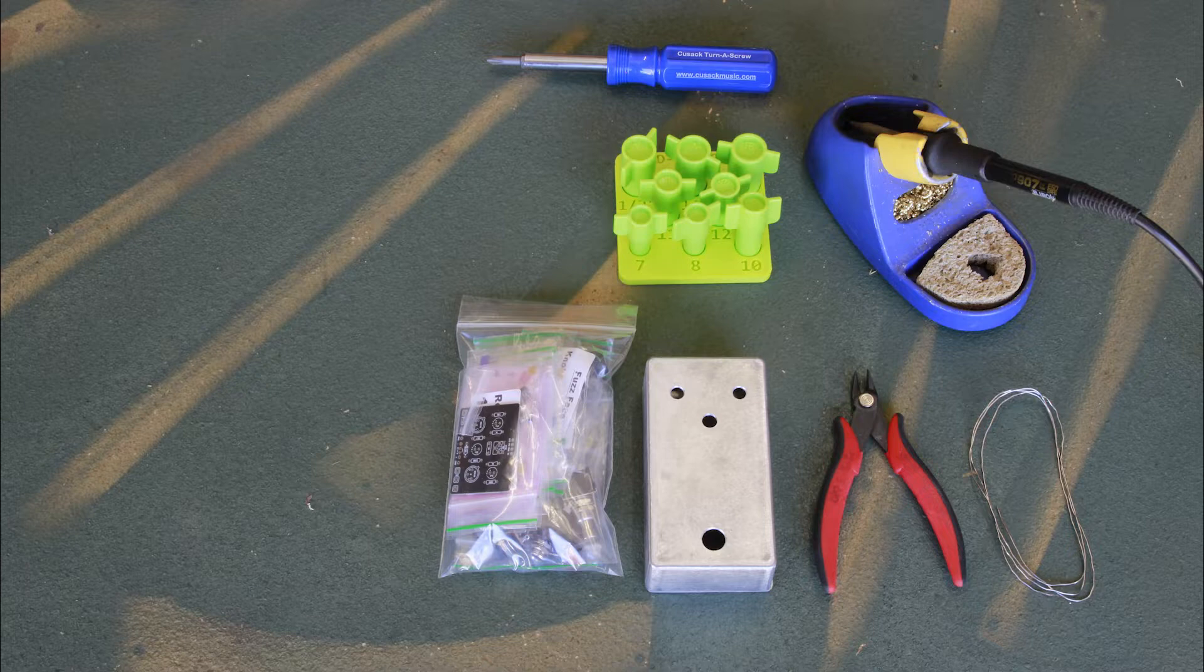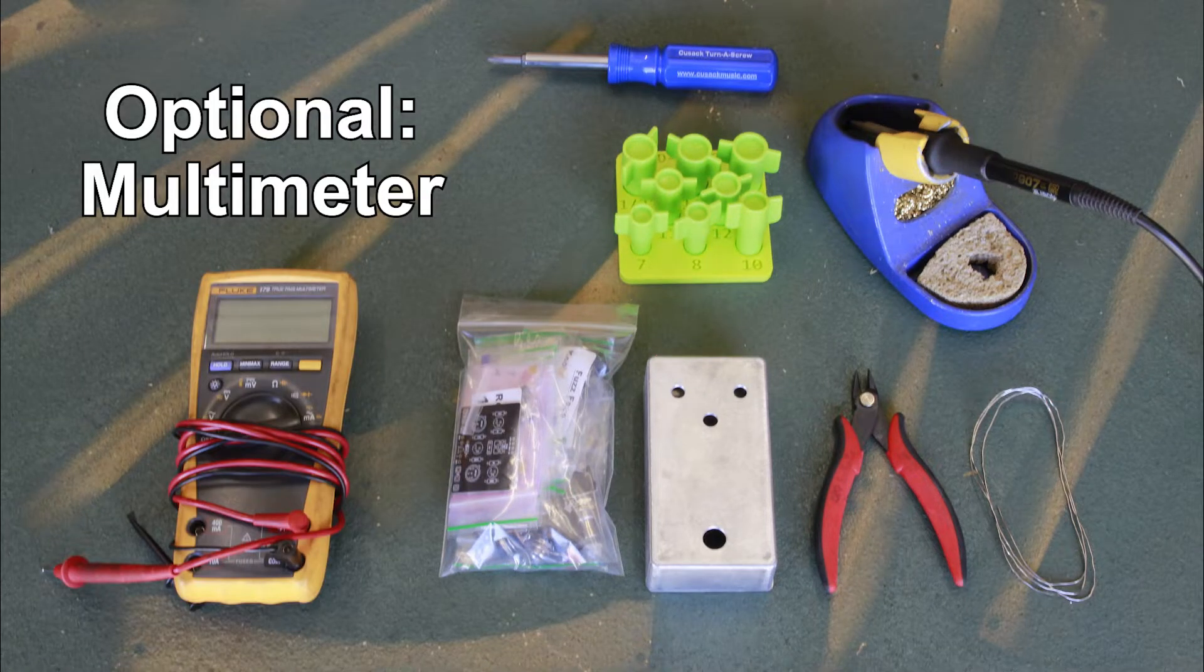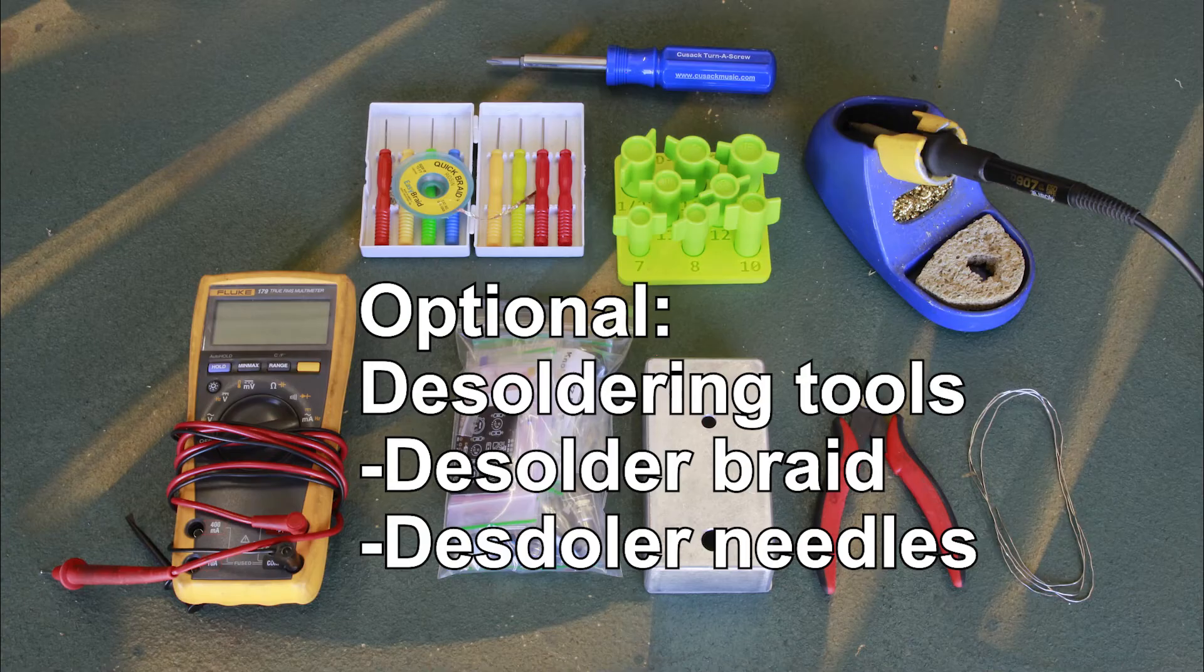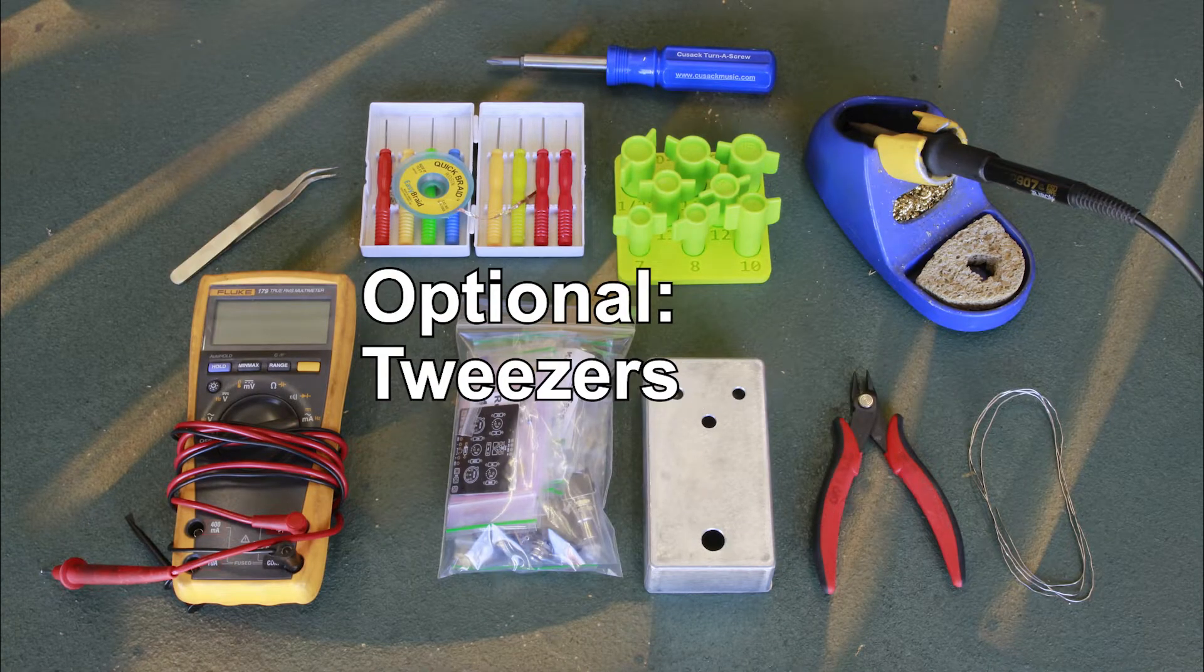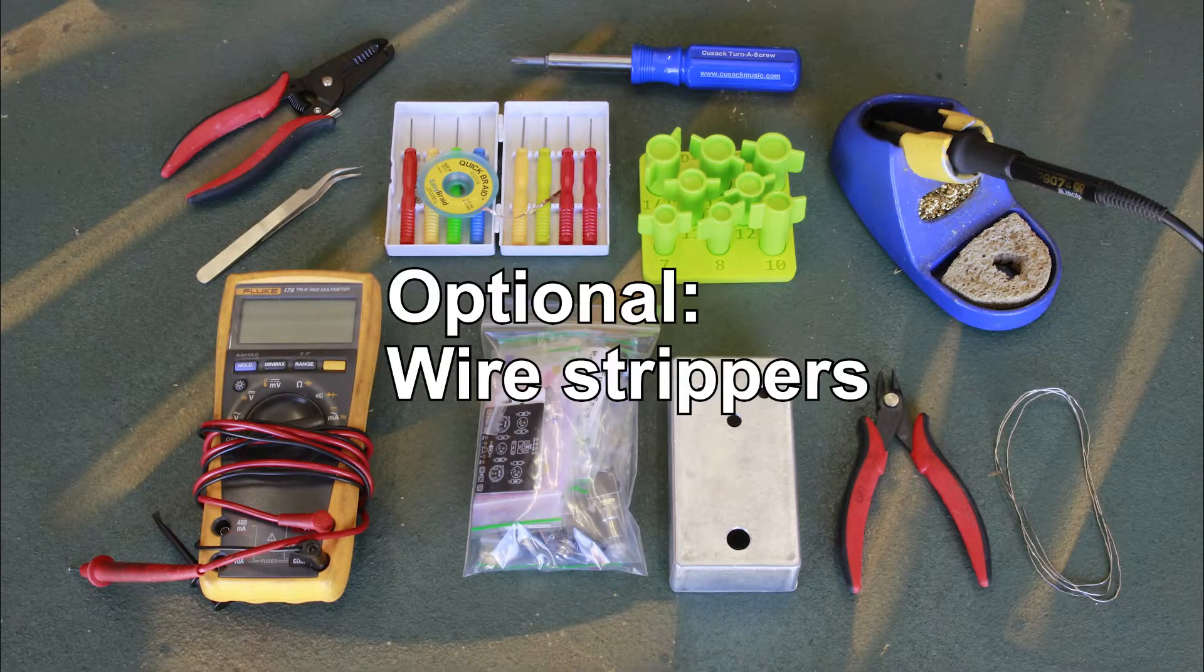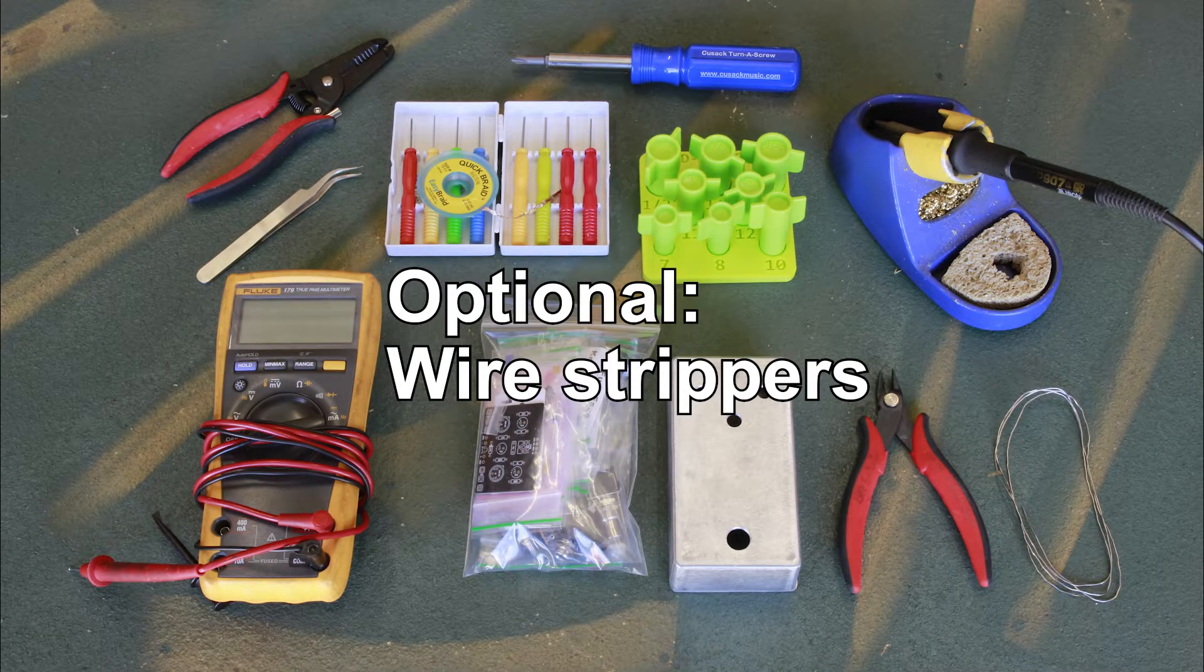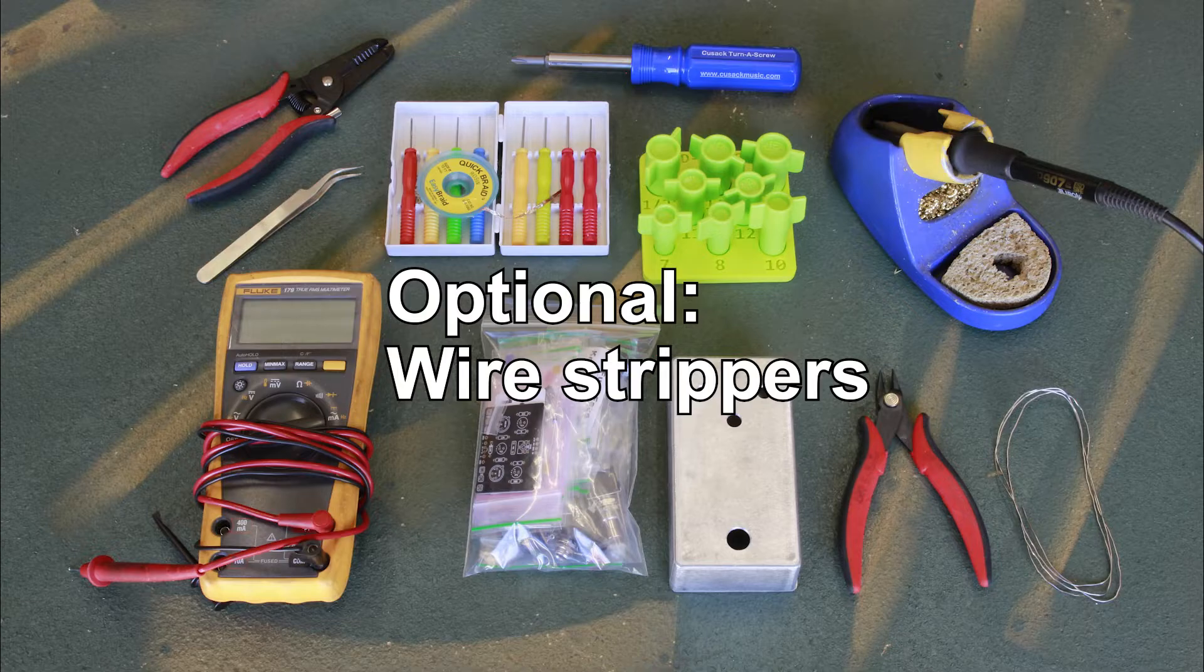Here are some optional but recommended tools: a multimeter for biasing the circuit and troubleshooting, desoldering braid or needles for correcting mistakes, tweezers for working in small places, and wire strippers for cutting and stripping wire to custom lengths. Our kits come with pre-cut pre-stripped wire, so this isn't required if you're using our kit.